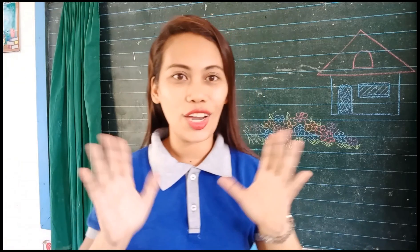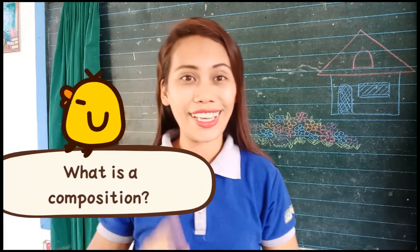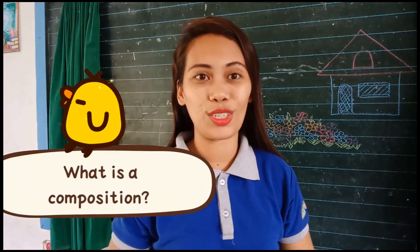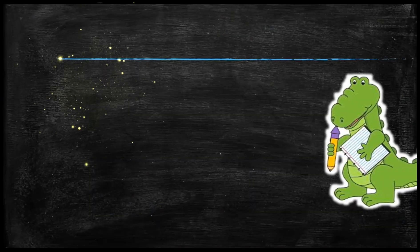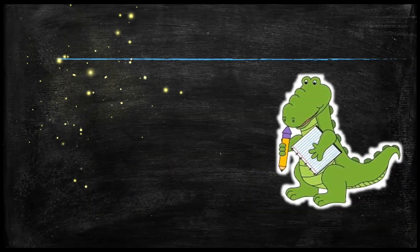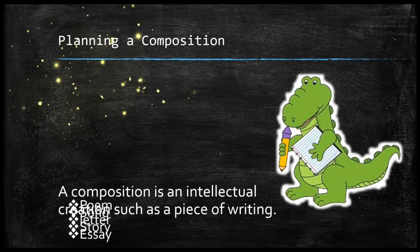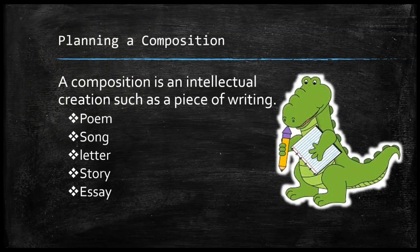Let's start with the question: what is a composition? A composition is an intellectual creation such as a piece of writing — for example, a poem, song, letter, story, essay, and so much more.